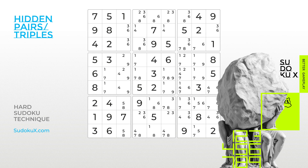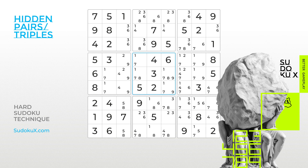The Hidden Pairs and Triples elimination techniques operate similarly, with the main distinction lying in the number of cells and candidates involved. In the context of Hidden Pairs, the aim is to identify two cells within a row, column, or block that contain two candidates each. These candidates cannot be placed in any other cell within the same house other than those two cells. Consequently, any other candidate present within those two cells can be eliminated. This technique differs from the naked equivalent in that it eliminates other possible candidates within the two cells.